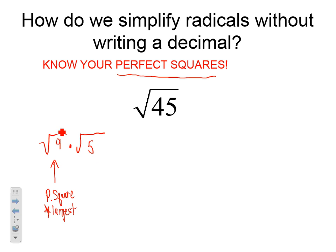So this problem turns into the square root of 9 times the square root of 5. Well, if you look on your list, what is the square root of 9? Well, it happens to be 3. So this problem turns into 3 square roots of 5. That is the simplified form without decimals.